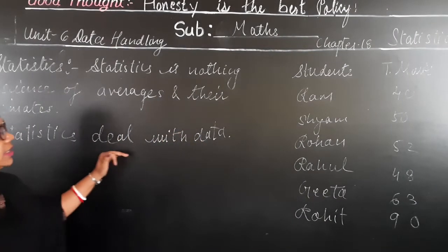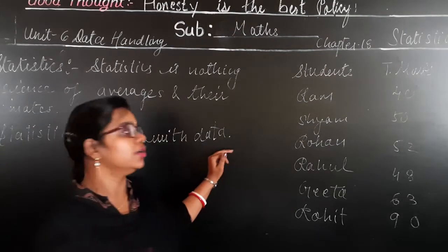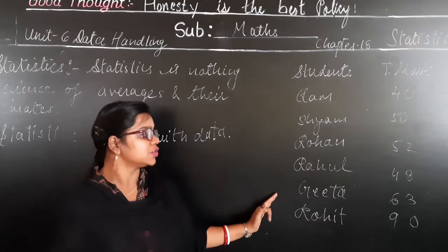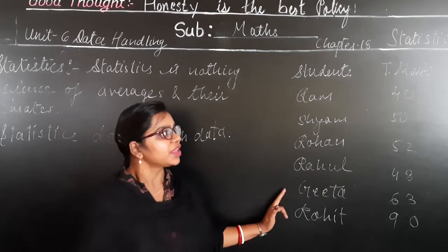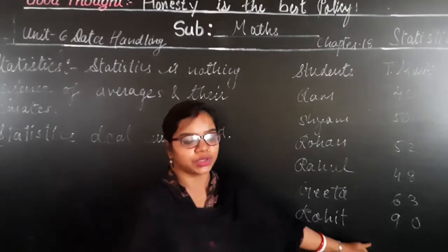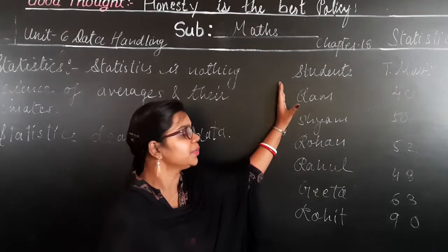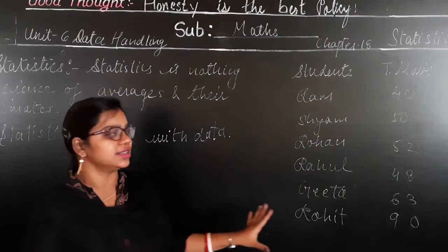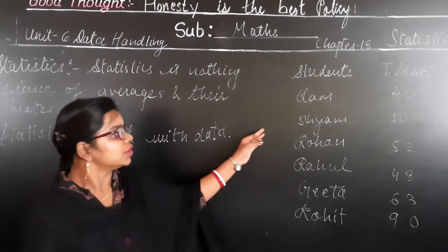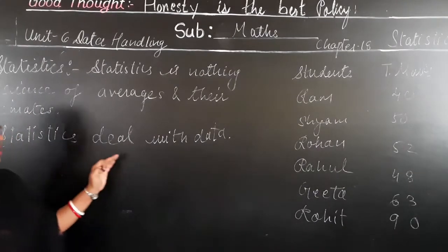Statistics is totally dependent upon the detail of the data, so in statistics we deal with the data. Suppose you are given the names of 6 students and their total marks. The number of students and the total marks given to you — this is the data. From the data we have to calculate the statistics.